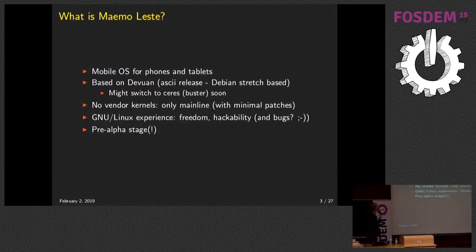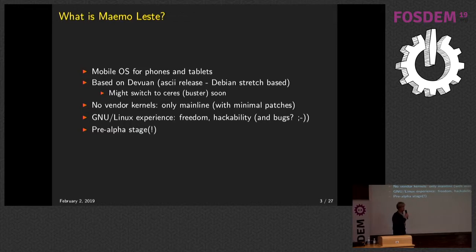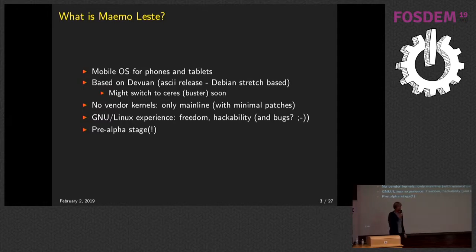Maemo Leste is a mobile OS for phones and tablets, like Android, iOS, UB Ports, or what the Purism guys are making. It's based on Dev1, which is based on Debian, but it's a Debian without systemd. Currently we're using Debian Stretch, or Dev1, but we might switch to the newer upcoming release soon, which will be Ceres or Buster.